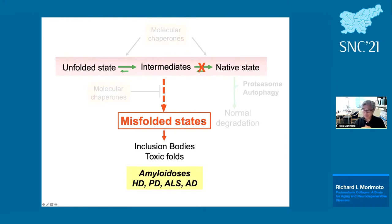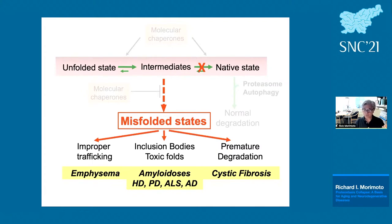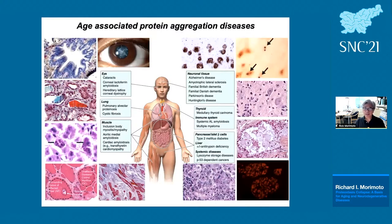When proteins do not move all the way towards native states, they populate the misfolded state. The most prominent examples are amyloidoses in Huntington's disease, Parkinson's disease, ALS, and Alzheimer's disease. Misfolding can also cause premature degradation, as with ΔF508 in CFTR leading to cystic fibrosis, or mutations in alpha-1 antitrypsin leading to improper trafficking causing emphysema. There are many hundreds of human diseases that are protein folding diseases: cataracts, cystic fibrosis, inclusion body myositis, neurodegenerative diseases, type 2 diabetes, and p53-dependent cancers.